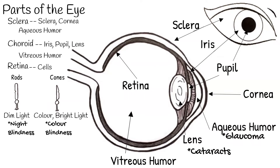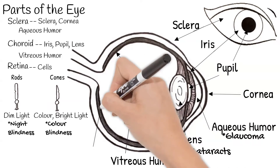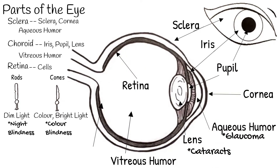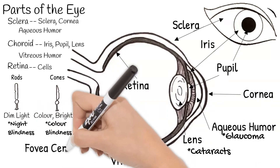There's an area of the retina that only has cones, which makes it the most light-sensitive area. It is called the fovea centralis.